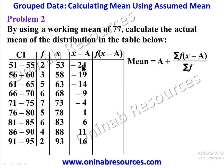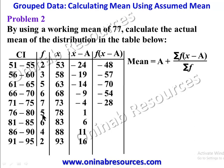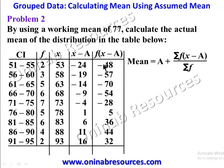For the f times (x minus a) column: 2 times negative 24 gives negative 48; 3 times negative 19 gives negative 57; 5 times negative 14 gives negative 70; 6 times negative 9 gives negative 54; 7 times negative 4 gives negative 28; 5 times 1 gives 5; 6 times 6 gives 36; 4 times 11 gives 44; and 2 times 16 gives 32.